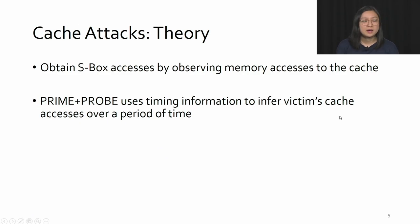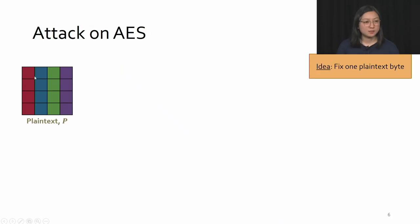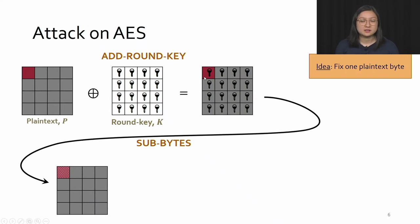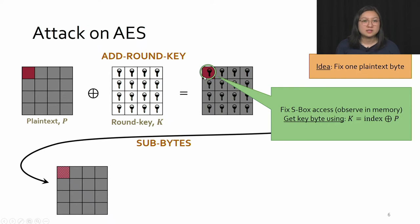We can get the index by using cache attacks. We obtain SBox accesses by observing memory accesses to the cache. We use Prime and Probe, which uses timing information to infer victims' cache accesses over a period of time. If we perform multiple encryptions with different plaintexts but fix one plaintext byte, after the add round key stage that byte's value is fixed to plaintext XOR key, which fixes the SBox accesses. We can observe these SBox accesses in memory, and since we know the plaintext and now have the index, we can get the key.